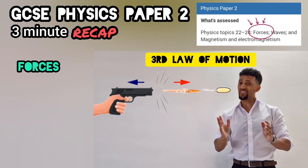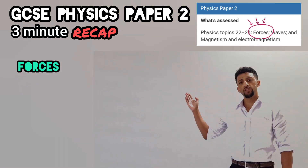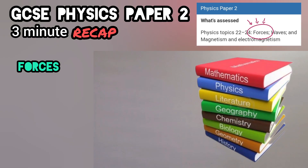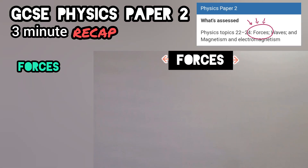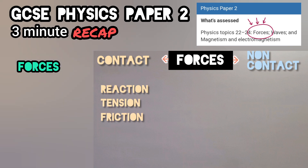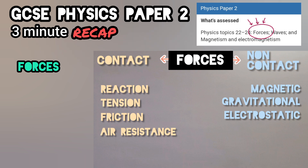Third one comes with this caption: every action must have a reaction. That applies to Lambos and Porsches, hardest of all of these courses. They divide up into two sources: contacts and non-contact forces. Reaction, tension in this instance, then friction and air resistance, magnetic and gravitation, electrostatic is a sensation.